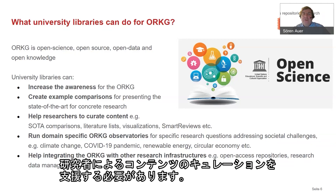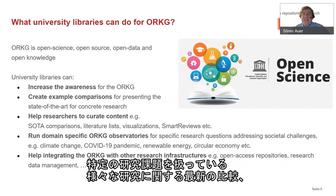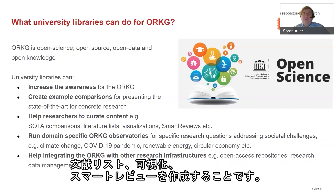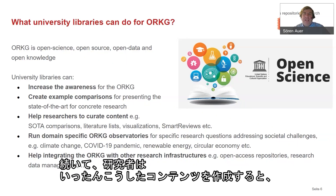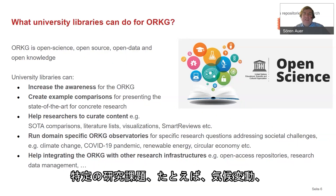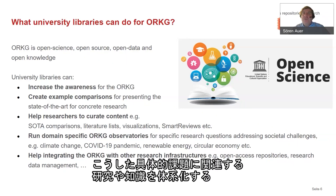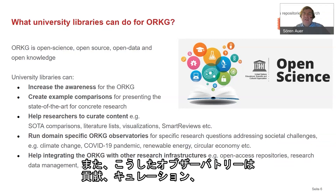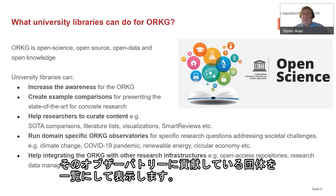We should help researchers create content — creating state-of-the-art comparisons like tabular comparisons of different studies addressing a certain research problem, or literature lists, visualizations, and smart reviews. Once researchers are able to create this content, they can run domain-specific observatories for specific research questions addressing societal challenges like climate change, the COVID-19 pandemic, renewable energy, or circular economy, organizing the knowledge related to that specific challenge.